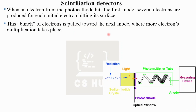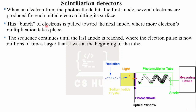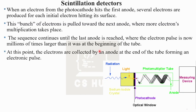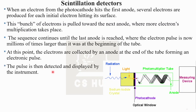This bunch of electrons is pulled towards the next anode where more electron multiplication takes place. The sequence continues until the last anode is reached, where the electron pulse is now millions of times larger than it was at the beginning of the tube. The electrons are collected by an anode at the end of the tube forming an electronic pulse. This pulse is detected and displayed by the measuring device to measure radiation.